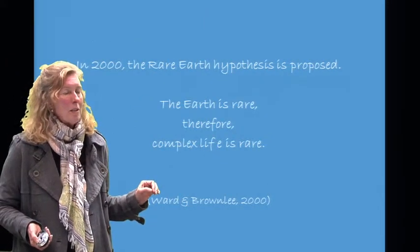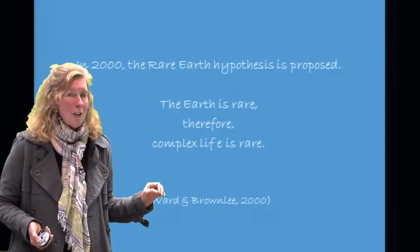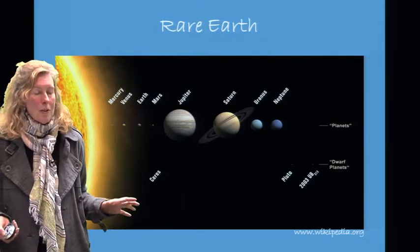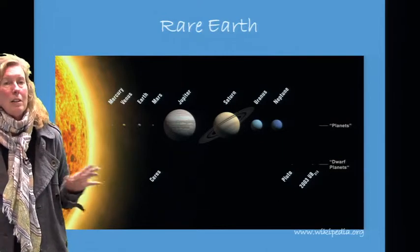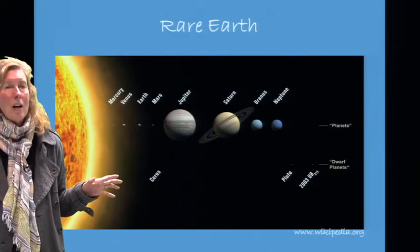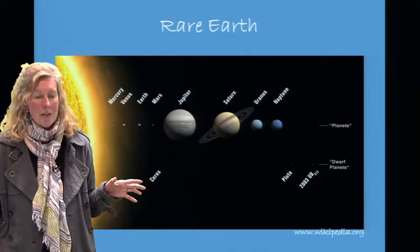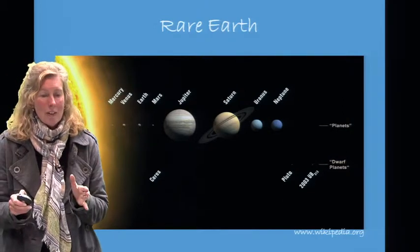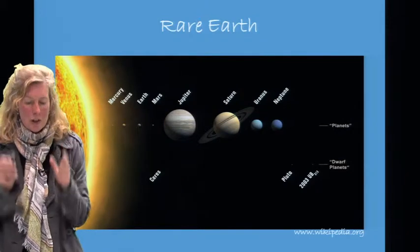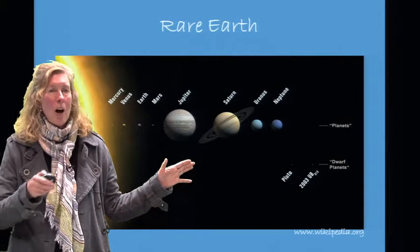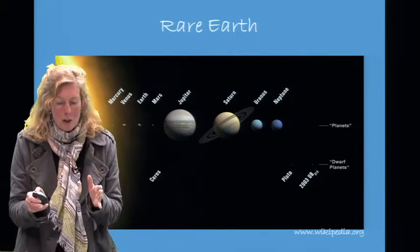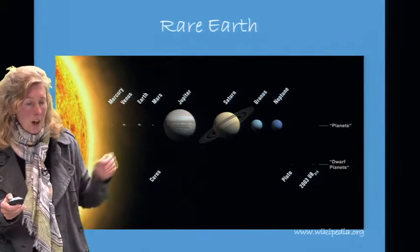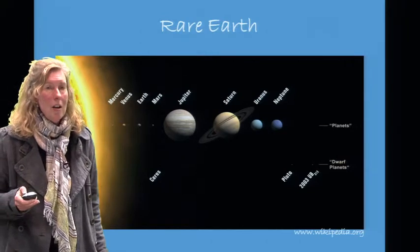In 2000, the Rare Earth Hypothesis was proposed. What this says is the Earth is rare, therefore complex life is rare. The Rare Earth Hypothesis proposes that we are an island — the Earth is an island in a sea of non-life. It is also called the Goldilocks Hypothesis. Like Goldilocks wanting everything just right, the Earth too is just right for life. It occupies a habitable zone, far enough from the Sun but close enough to have liquid water.